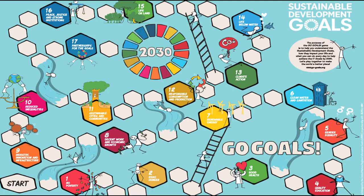This is what your game board looks like. This game is very similar to Snakes and Ladders. Players advance the number of spaces by rolling a single dice. If a player lands at the bottom of a ladder, they can immediately climb to the top. If a player lands at the top of a slide, they immediately move to the bottom. If a player lands on SDG Goal Field 1 to 17, they draw a card corresponding to the goal number. Another player will read the card question, and a correct answer allows the player to roll the dice again. The first player to arrive on 2030 wins. Let's play!